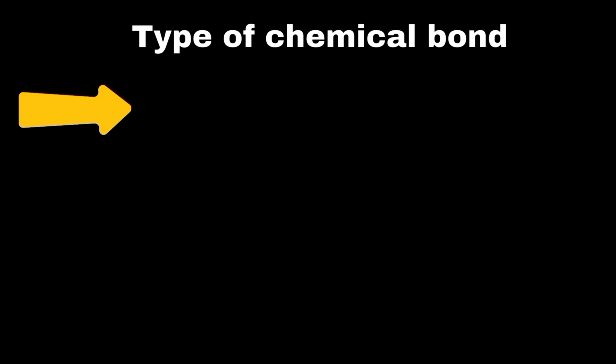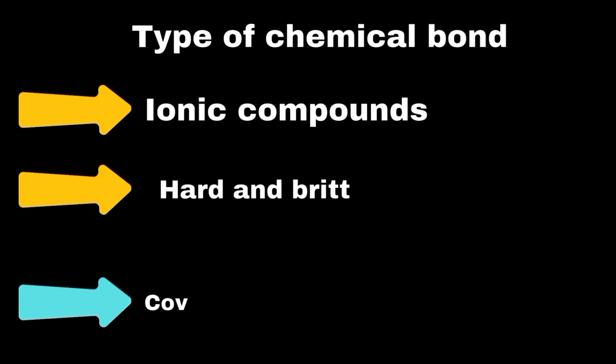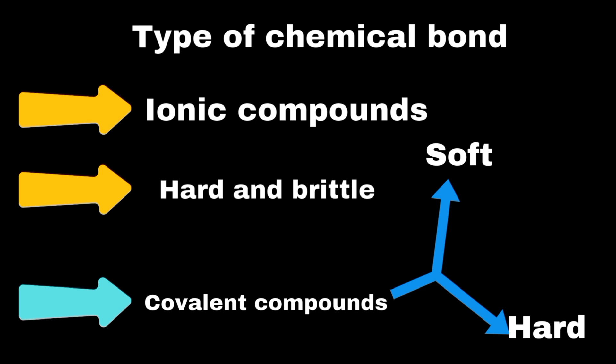The type of chemical bond influences how a substance behaves. For instance, ionic compounds are typically hard and brittle. Covalent compounds can range from soft to hard, and metals are usually malleable and conductive.